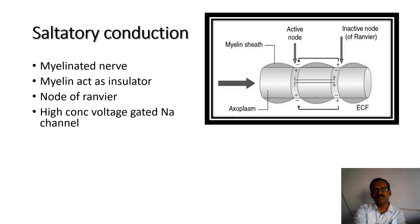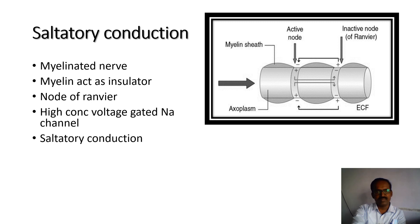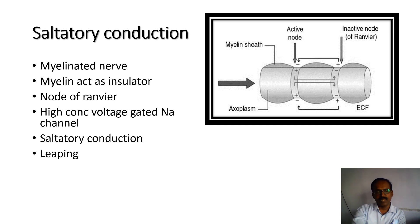The impulse jumps from one node of Ranvier to another node of Ranvier. That is the saltatory conduction. Saltatory means leaping or jumping from one node to another node.